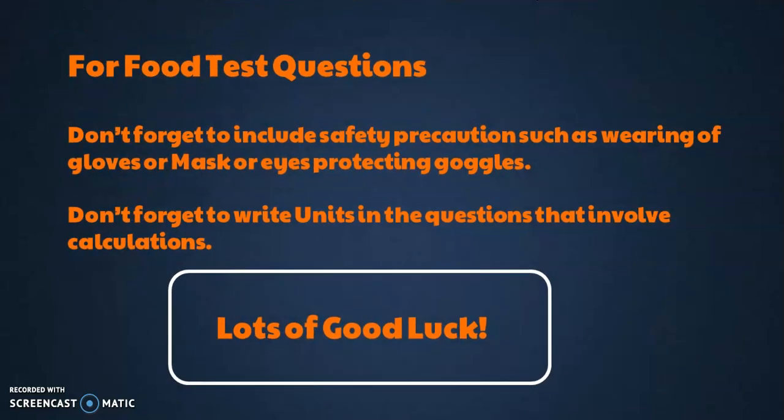Here in the last are some tips for the food test questions, which are very common and popular questions. They are almost asked in every paper. Food tests: you know about the tests for reducing sugars, procedure for the Benedict test, biuret test for proteins, and ethanol emulsion test for fats and starch iodine test for starch. You must be able to write about the procedure and results and quantitative analysis as well. Don't forget to include safety precautions such as wearing of gloves or mask or eye-protecting goggles. If they are telling you how you will perform safely this procedure, include these safety precautions. Don't forget to write units in the questions that involve calculations.